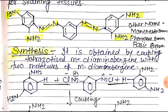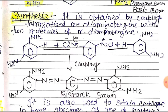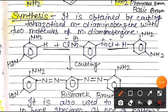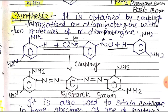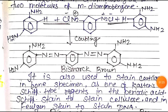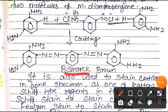Synthesis: It is obtained by coupling tetrazetized diaminobenzene with two molecules of diaminobenzene. These are coupled to each other to form the product, Bismarck brown.